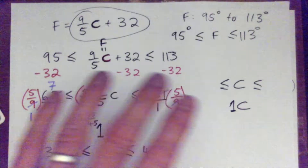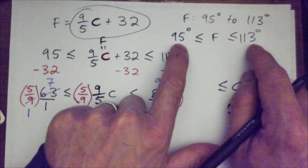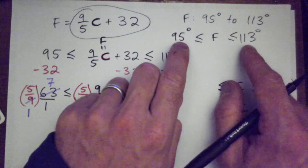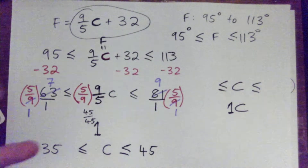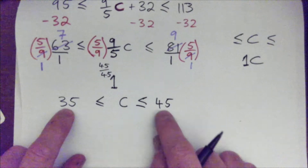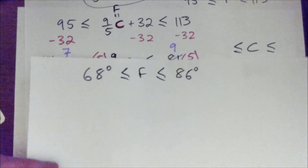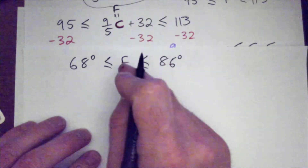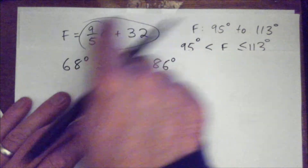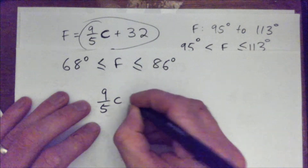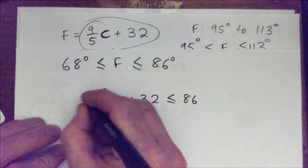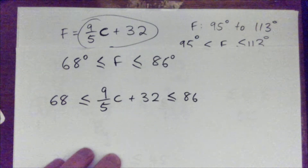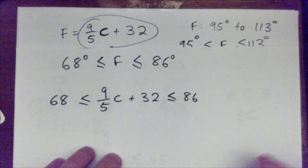By the way — what does this mean? This means that if the temperature today is going to be between 95 and 113 Fahrenheit, maybe from 10 a.m. to 10 p.m., the Celsius range is between 35 and 45. So that's all we're saying. For the next question: if the Fahrenheit is between 68 and 86, what is the Celsius range? You replace F with the expression: 68 less than or equal to 9 fifths C plus 32, less than or equal to 86. Students at home, please press pause and do it yourself.